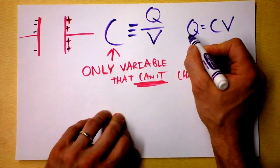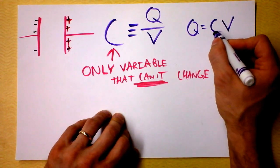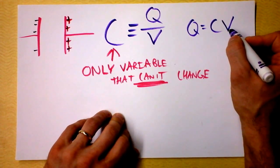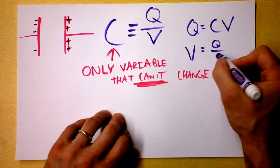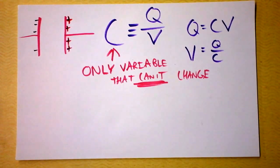Q is CV says that the charge on the positive plate of the capacitor will be the capacitance times the voltage of the capacitor. Another way of looking at this is saying that the voltage of a capacitor is the charge divided by the capacitance of the capacitor.